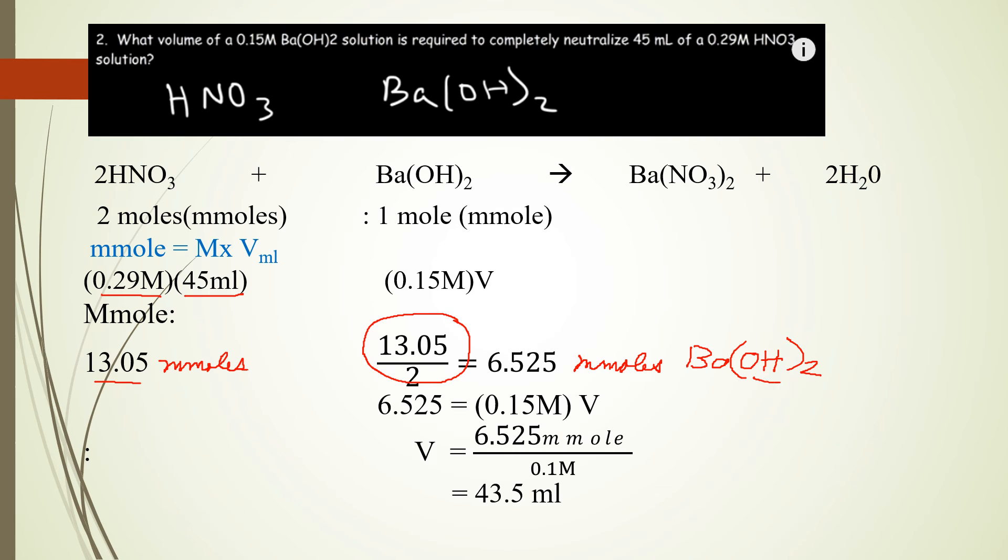Because it will deliver twice the amount of hydroxide. Since there are two hydroxide ions, times 2 will give you the equivalent of 13.05 millimoles that will react with the hydrogen ions. So you will need only half of the barium hydroxide, 6.525.